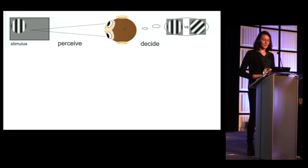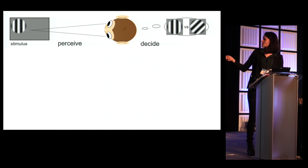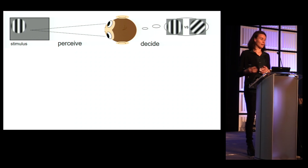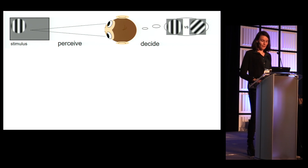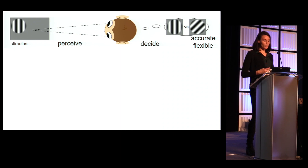Visual decision-making is often studied within a discrimination task. Let's assume a monkey or a human that has to perceive a grading stimulus and has to make a decision about it. We know that monkeys perform such a task accurately and flexibly, and we want to know how is this possible — how does it do that?